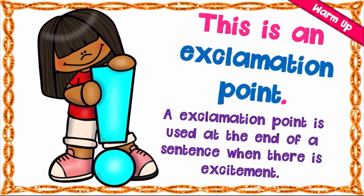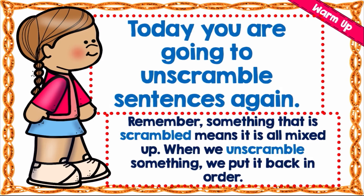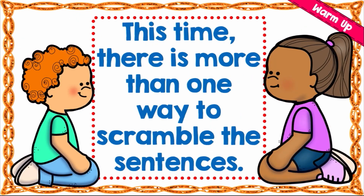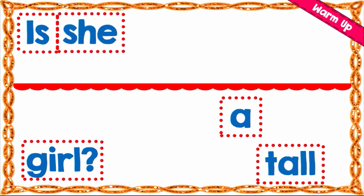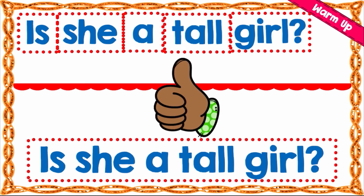Today you are going to unscramble sentences. Remember, something that is scrambled means it is all mixed up, and something that is unscrambled is in order or orderly arranged. This time there is more than one way to unscramble a sentence. We have: 'is a girl she tall.' This sentence is scrambled — we don't know which word is supposed to be where. Let's see how to unscramble it: 'Is she a tall girl?'